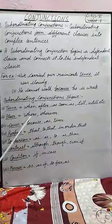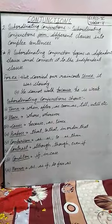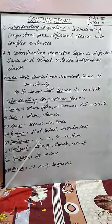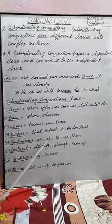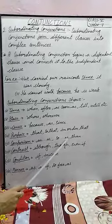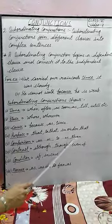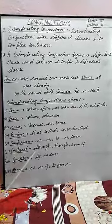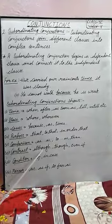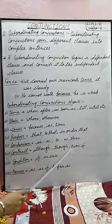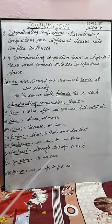To show purpose in the subordinating conjunction, we use 'that', 'so that', and 'in order that'. To show comparison, we use 'as...as', 'so...as', and 'than'.